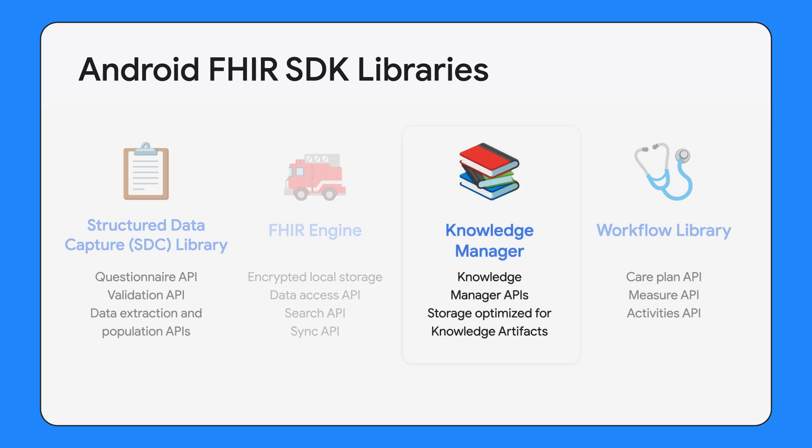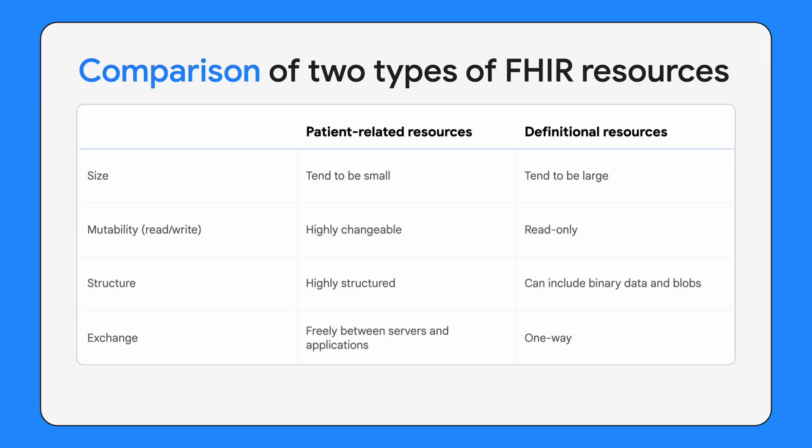The Knowledge Manager library is designed to specifically help deploy and manage FHIR definitional resources, like questionnaires, value sets, and plan definitions, that are often published as part of implementation guides. Using Knowledge Manager APIs, these resources — which are managed separately to enhance performance — are available to other libraries for use throughout your application.